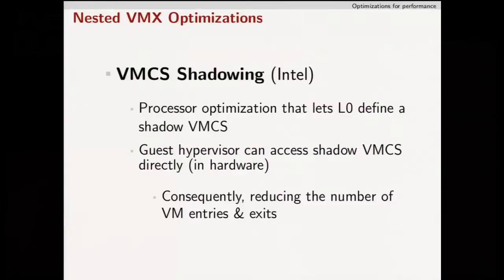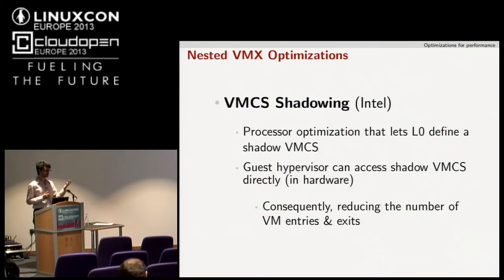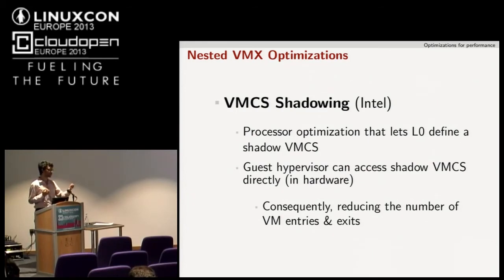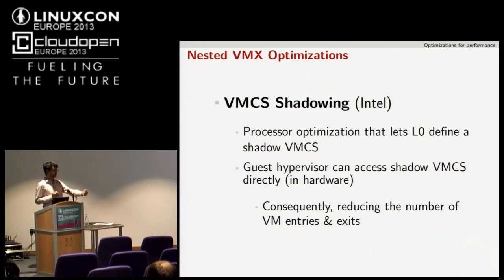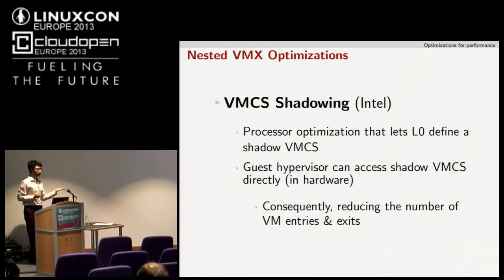Two new optimizations have been introduced. One is with the Haswell architecture: a feature called VMCS shadowing. VMCS — Virtual Machine Control Structure — is a processor-specific data structure that contains the guest and host CPU states. With VMCS shadowing, the L0 hypervisor can define another VMCS for your level-1 hypervisor, so that the guest hypervisor doesn't have to exit to L0 and can directly store guest state in the shadow VMCS structure.